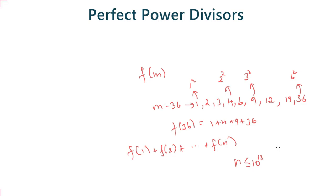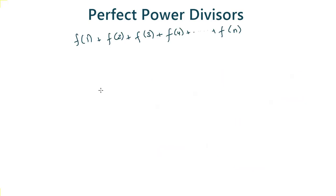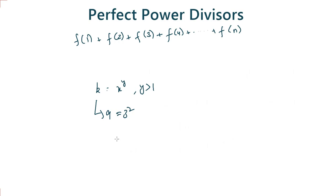Now let's see how we can solve this problem. Consider a perfect power k, so k will be equal to some x^y where y is greater than 1. I need to find the contribution of k to the entire sum from f(1) to f(n). Say k is equal to 9, which is 3 squared. The terms to which 9 will contribute are f(9), f(18), f(27), and so on, because all multiples of 9 will have 9 as a factor.